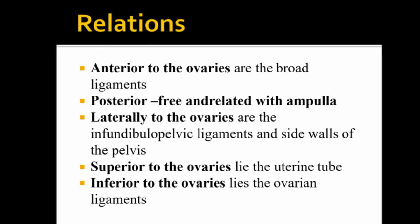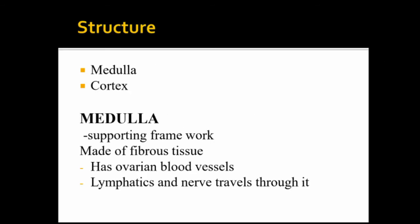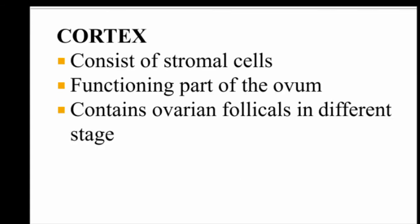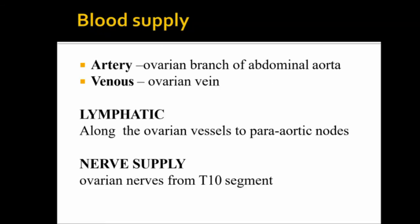The relations of the ovaries include the anterior, posterior, lateral, and inferior ligaments, and the side walls of the pelvis. The ovary has a medullary cortex: the medulla is the supporting framework made of fibrous tissue containing blood vessels, lymphatics, and nerves; the cortex consists of stromal cells and contains ovarian follicles in different stages. The blood supply is from the ovarian branch of the abdominal aorta and ovarian veins. The nerve supply is from the ovarian nerve from the T10 segment.